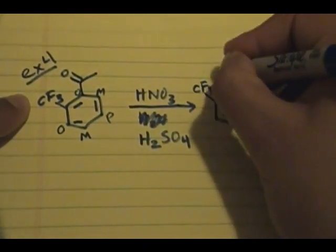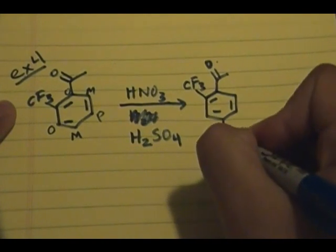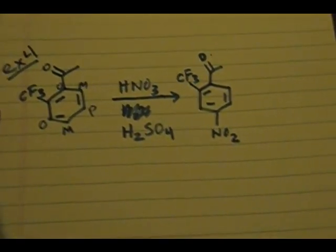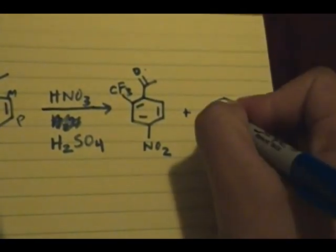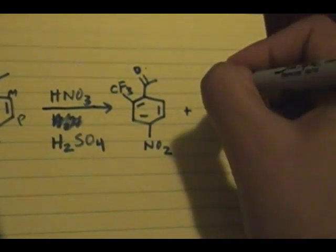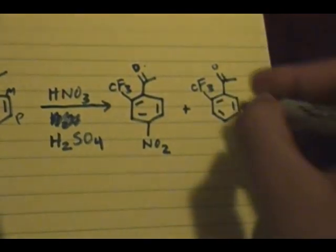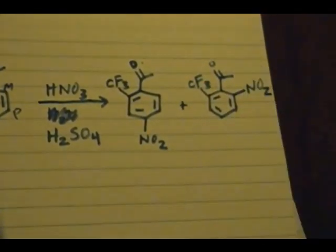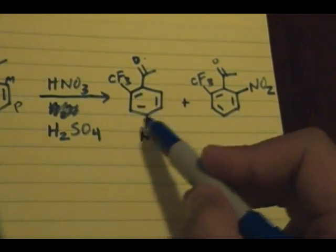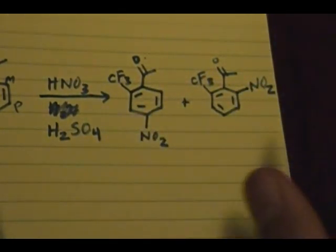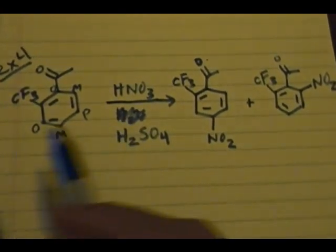So CF3, you have your ketone here. So you have NO2 in this position, plus your second product you will form will be a NO2 group in this position. Because again you cannot twist this in such a way where you'll have this molecule. They're two separate products. So that's the product of this reaction right here.